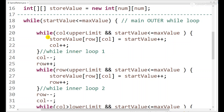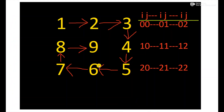This is our first inner while loop. We are going from left to right along the top row: row value stays constant while column changes from 0 to 1 to 2. In the next step we move down — row value changes but column stays at the upper limit.